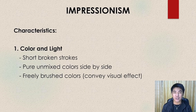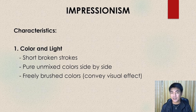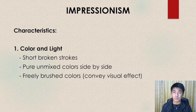So let's begin with impressionism. From the word itself — impress — the artists of impressionism are actually making an impression from society. The first characteristic of impressionism is about color and light. If we look at an artwork or masterpiece under impressionism, we can see that they use short, broken strokes — not long strokes — in applying their paintbrush on the canvas.